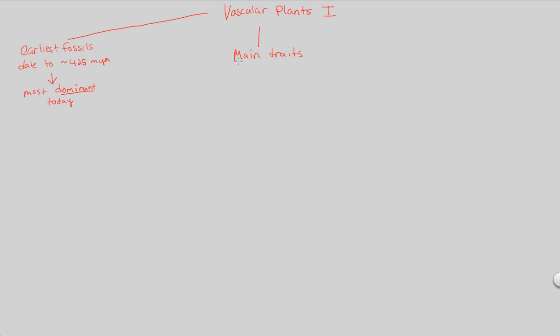The first main trait to understand is the fact that we have a bit of a switch in terms of the alternation of generations. And this is something that's always asked about for students to make sure they understand the switch. And the switch is simple. What has happened now is that in vascular plants, the sporophyte, which is diploid, this sporophyte is now the dominant life cycle stage.